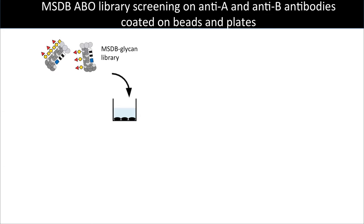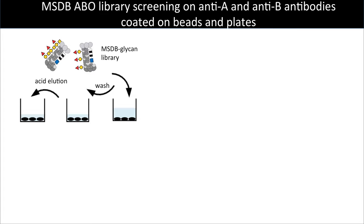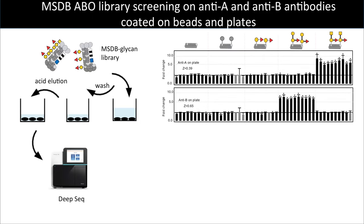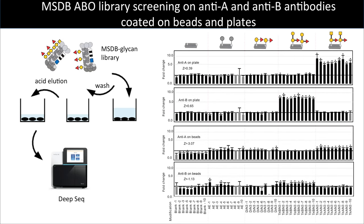Next was to screen the glycan library on anti-A and anti-B antibodies. We do this by first coating plates with purified monoclonal IgM antibodies, adding the glycan library, washing to remove the non-binders, eluting the binders with acid, and then PCR amplifying the eluted phage and deep sequencing it. I tested this on two different platforms — a 96-well plate and magnetic beads. We got a higher signal for antibodies coated on plate as compared to beads. We think IgM antibodies did not bind well to the magnetic beads, so all assays henceforth were done on plates.